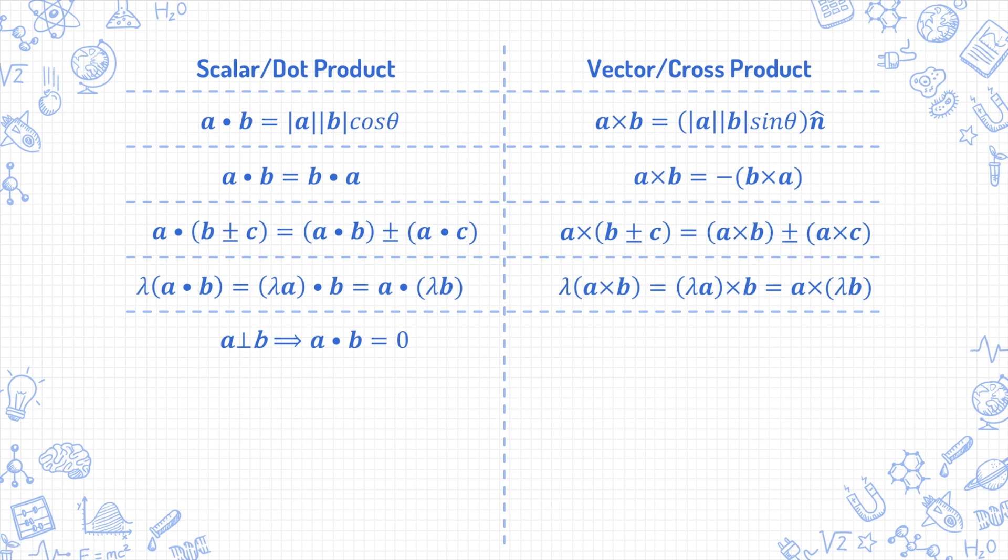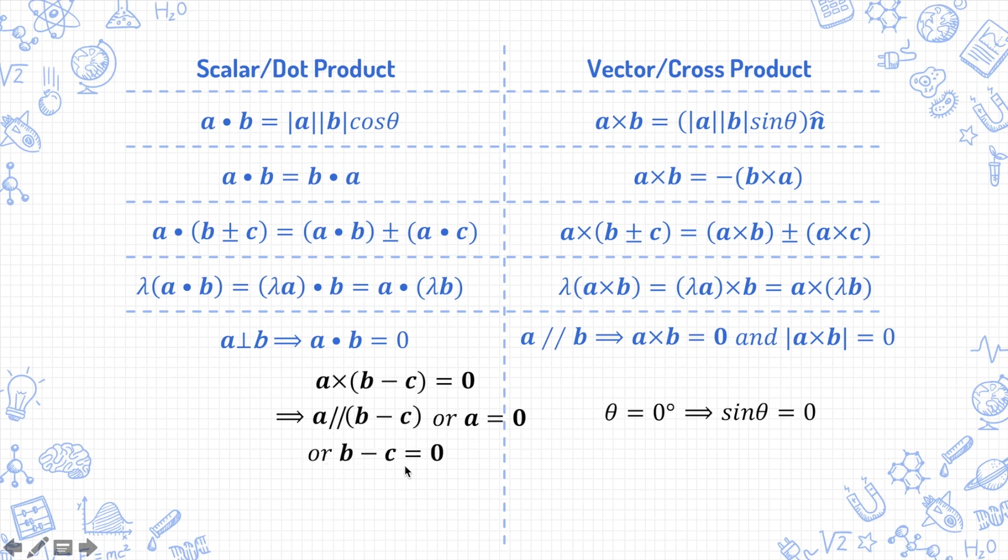On the other hand, when two vectors are parallel, it means that the angle theta between them is 0 degrees, which will mean that sine theta equals 0. So, if a is parallel to b, then a cross b equals the zero vector or mod a cross b equals the number 0. And you also need to be able to flip it around and see that if a cross b minus c equals the zero vector, it means that either a is parallel to b minus c or a equals the zero vector or b minus c equals the zero vector, which will mean that b equals c.